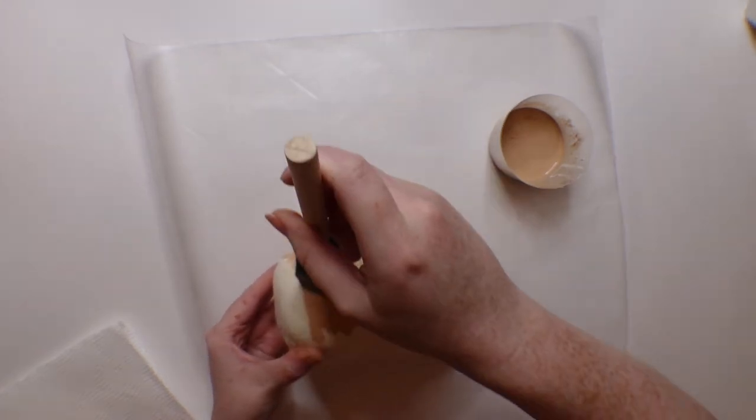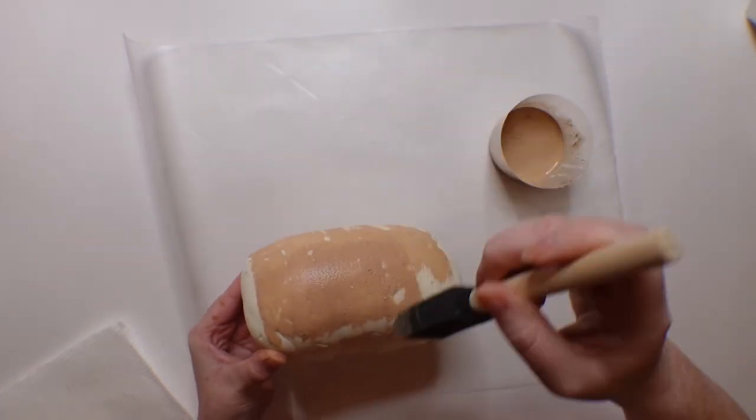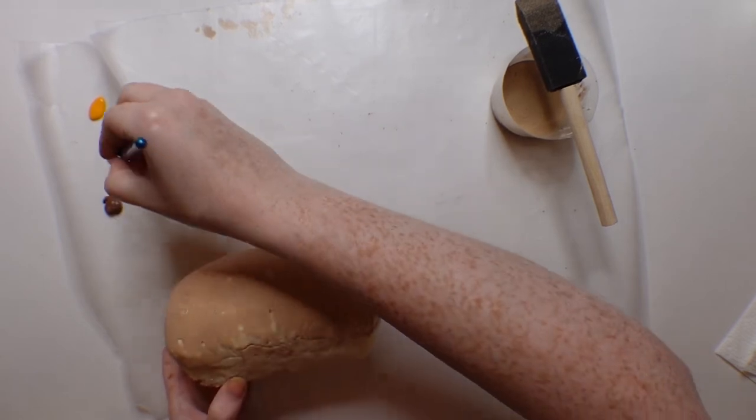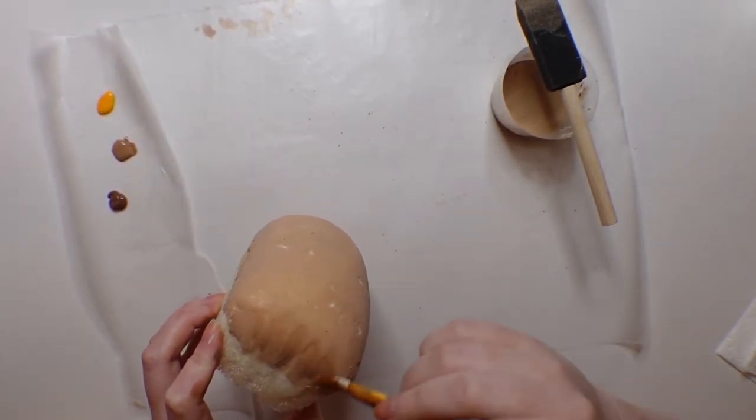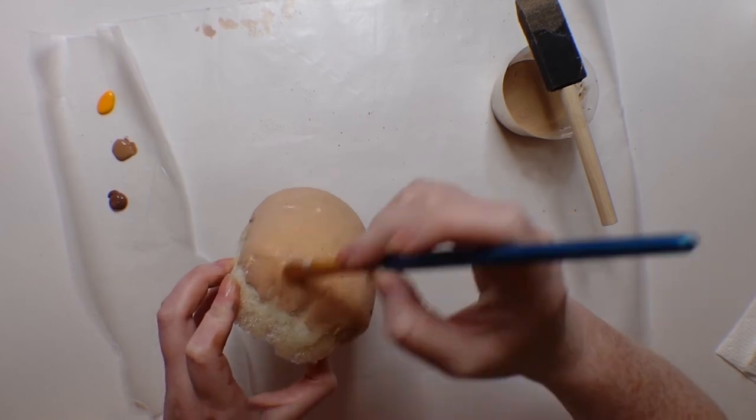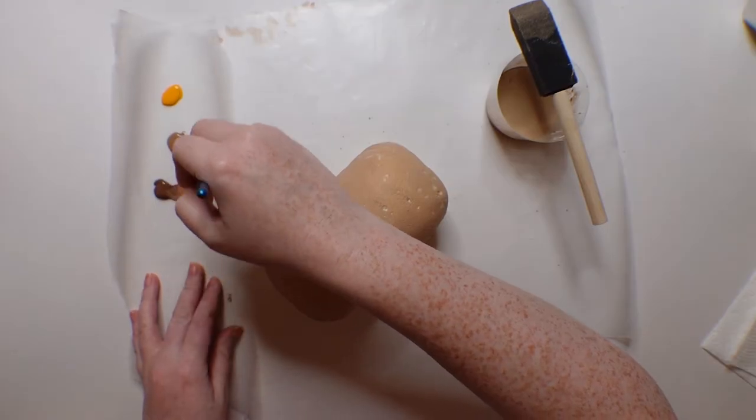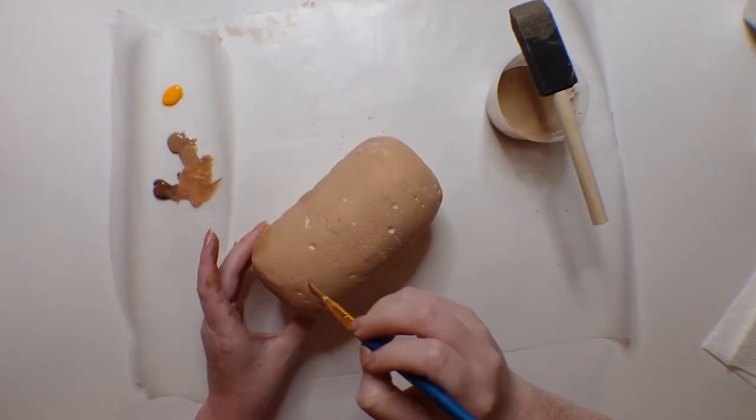And then once you have your first wash, you can mix up some just regular acrylic paint, and then I like to go around the edges and just kind of make it look a little bit more toasty with a darker color. And then I even like to go across the top and do some kind of lines to make it look like it came out of the oven.